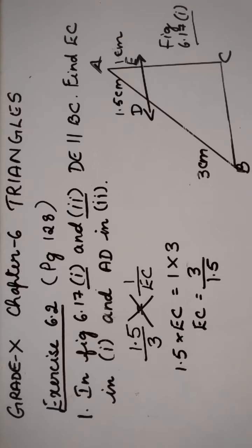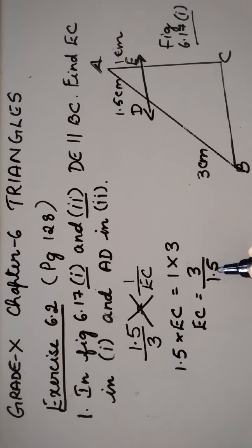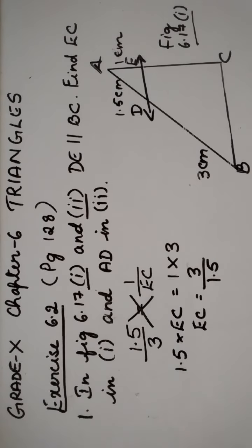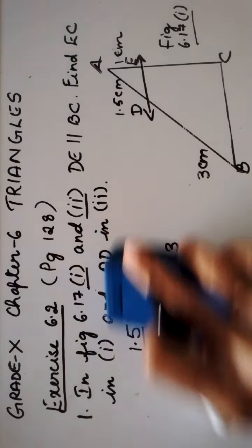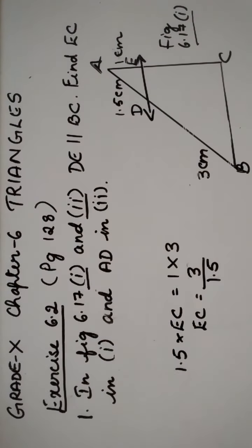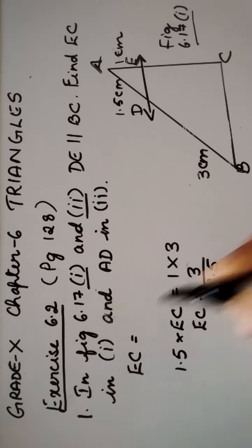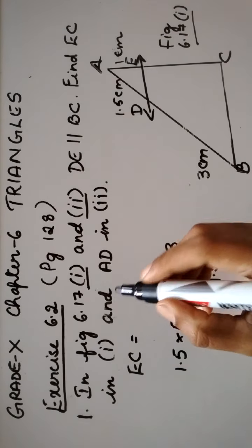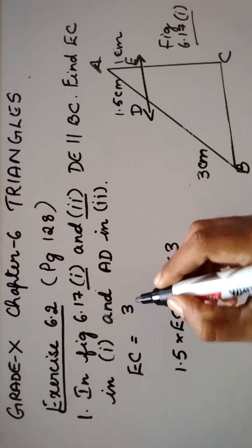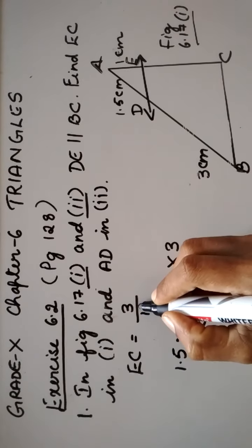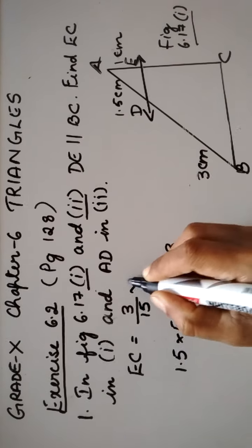So now let us remove this decimal point. So what we need to do? Remove the decimal point. EC is equal to, to remove the decimal point, we need to multiply this by 10.